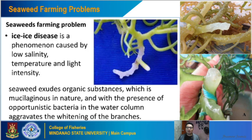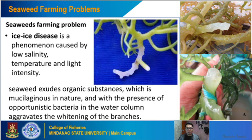When seaweeds experience ice-ice disease, they exude organic substances that are mucilaginous in nature. With the presence of opportunistic bacteria in the water column, this aggravates the whitening of the branches. As a defense mechanism, when temperature, salinity, and light intensity are low, the seaweed exudes slimy mucilaginous organic substances, and opportunistic bacteria gather in this mucus. This causes the thallus of the seaweeds to turn white — that is the basic concept of ice-ice disease.